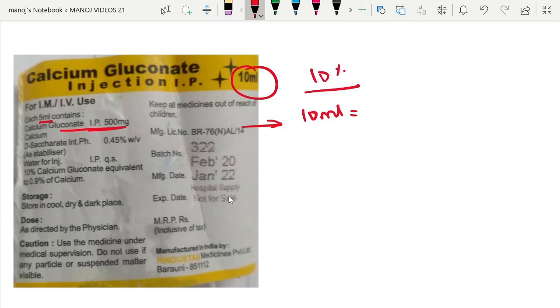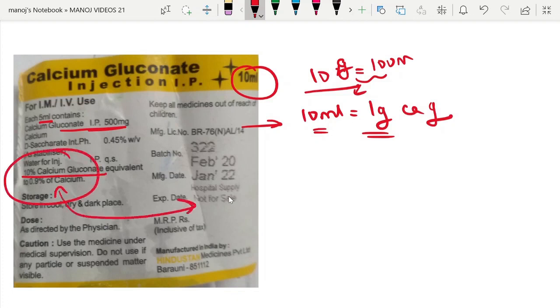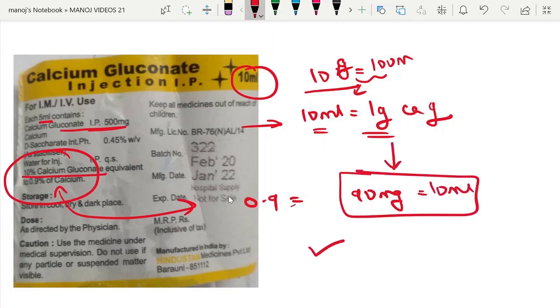10 ml contains 1 gram of calcium gluconate, which is equivalent to—here it is written—0.9%, that is 90 mg in 10 ml. That's all.